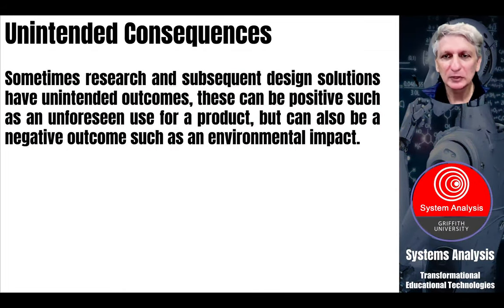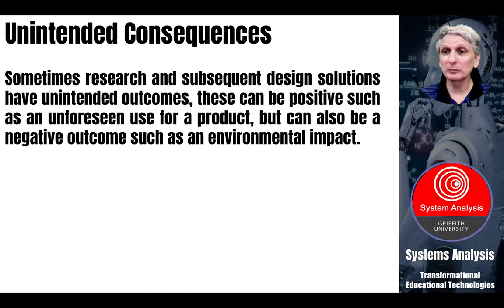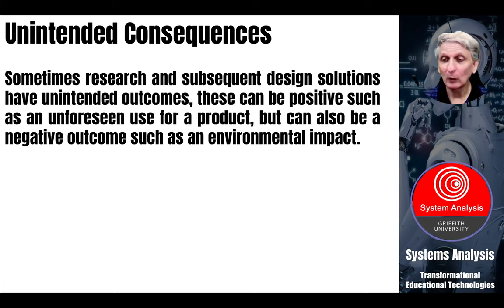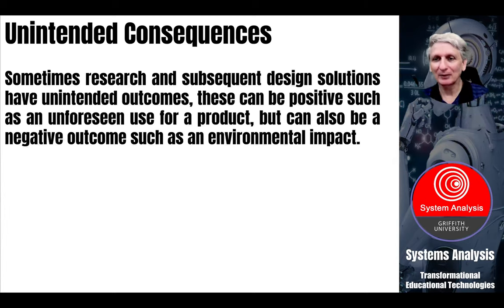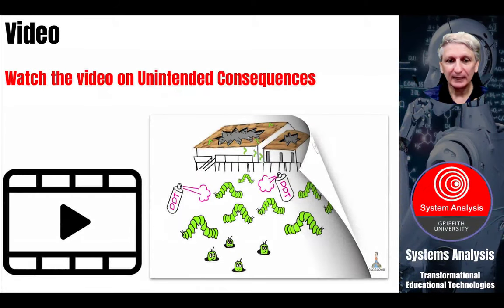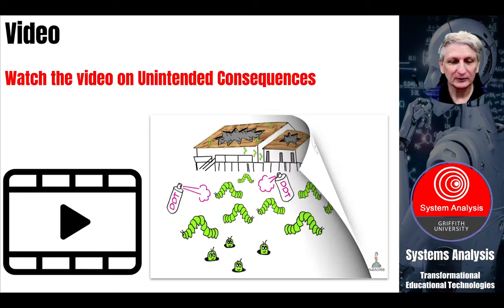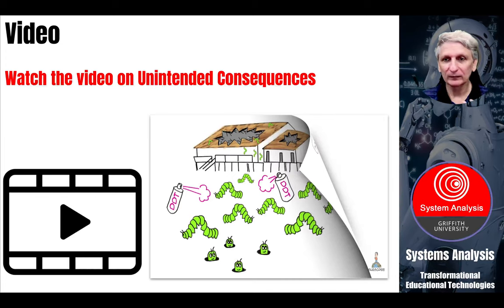Now, sometimes when we solve problems we can cause problems — this is called unintended consequences — where we're trying to solve a problem and make things better but something goes wrong and makes something worse. Understanding systems can help us avoid doing that. It's a way of examining different possibilities and exploring them, or if things do go wrong, trying to understand what has gone wrong and coming up with some sort of intervention to address that problem.